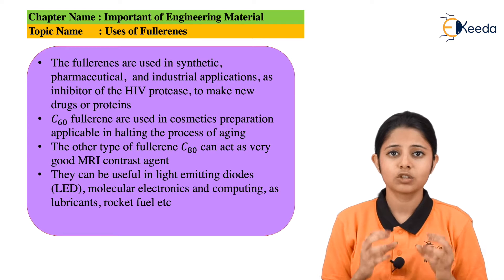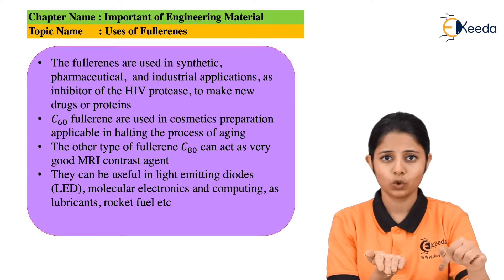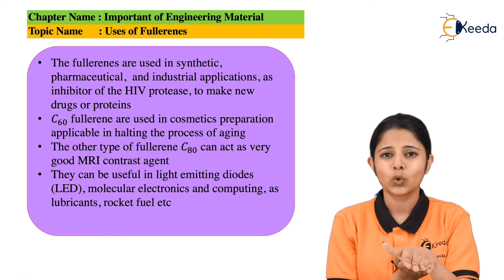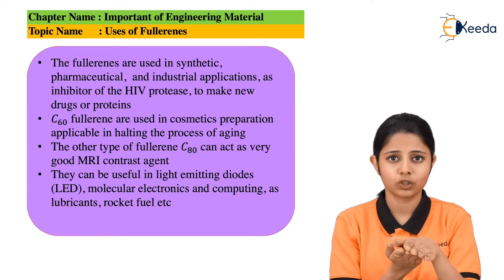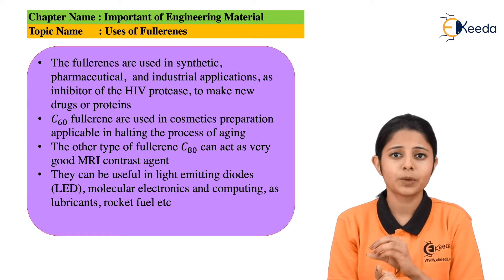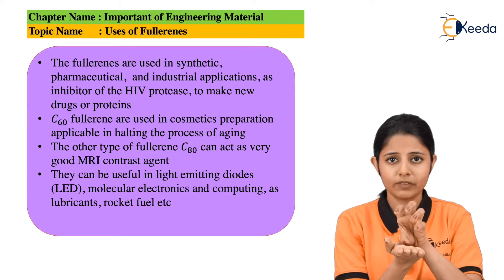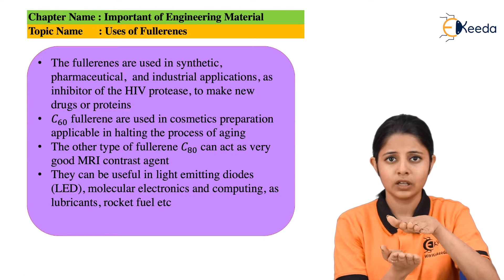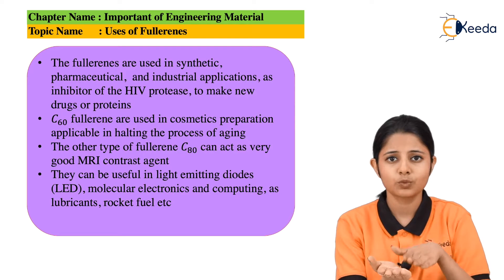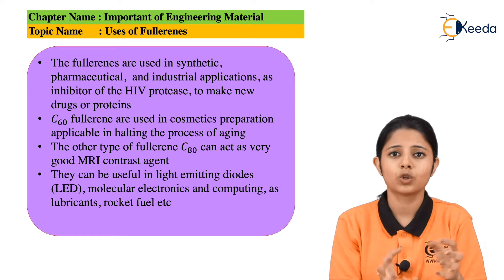C60 Fullerenes are spherical in shape and because of that they can roll. If there are two machine parts both in motion, they experience friction, which is not good. They need some kind of lubrication. If Fullerene — a spherical ball — is placed between them, both parts will roll over the spherical ball, and there will be no friction, resulting in smooth motion between the two surfaces. That is why Fullerenes can also be used as lubricants.